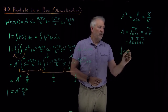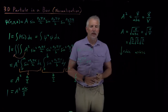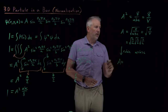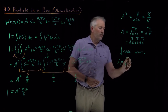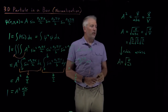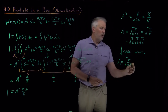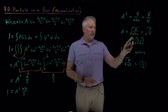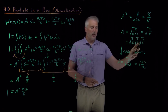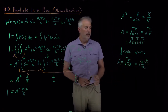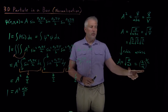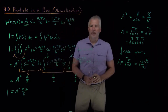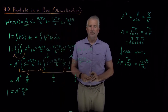For the special case where we have a cubic box — where the length is the same in the x, y, and z directions — each of a, b, and c is the same, and the normalization constant simplifies to the square root of 8/a³. We can also write that as (2/a)^(3/2), since √(2/a) × √(2/a) × √(2/a) gives us (2/a) to the three-halves power. Any one of these forms is the normalization constant for a cubic box, and that's the constant we insert to write the full complete wave function for the three-dimensional particle in a box.